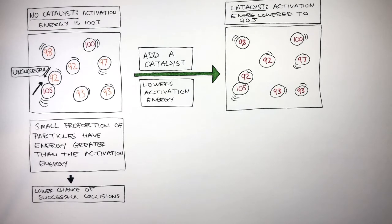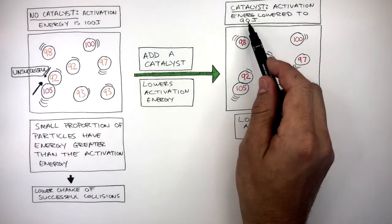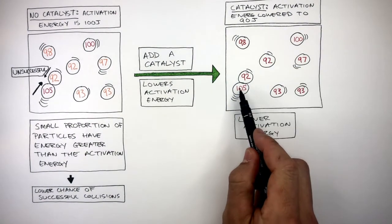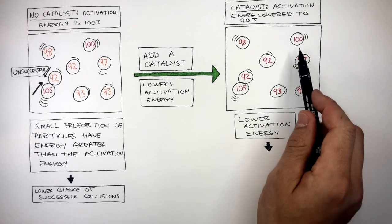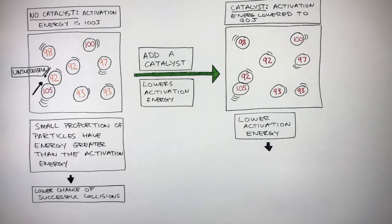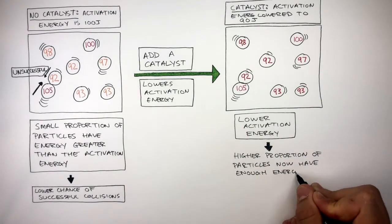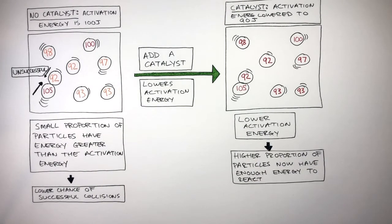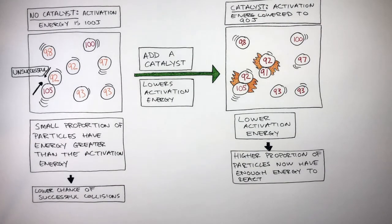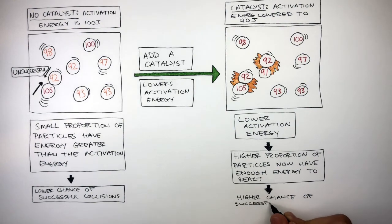Because of the catalyst, there is a lower activation energy of 90 joules. We can see that all the particles now have the activation energy — a higher proportion of particles now have enough energy to react. So even though particles still have the same amount of energy, when they do collide, this now results in successful collisions, as we can see here. The lower activation energy causes there to be a higher chance of successful collisions.